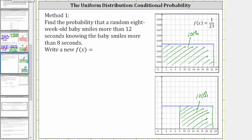So to find this conditional probability, we will find the new probability density function using x values from 8 to 23. Therefore, the new probability density function is equal to 1 divided by the quantity 23 minus 8, which is equal to 1/15. So f of x equals 1/15, which gives us the height of this rectangle.